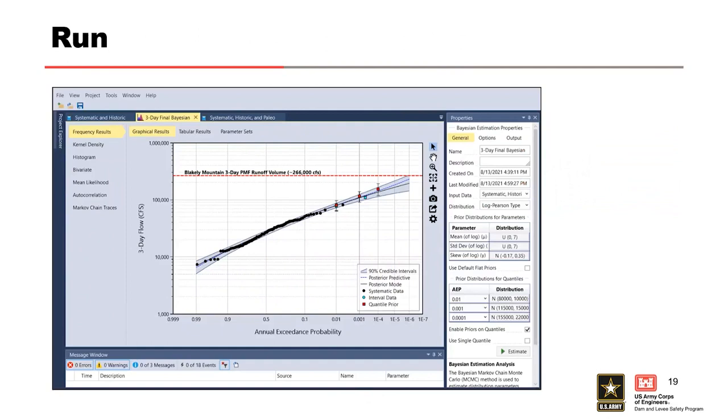Best Fit's Bayesian estimation tab allows the user to select an input data and a distribution type. It has default inputs for prior distributions that are already provided based on the input data that you select. There's default simulation options and output options that are already automatically set for you. Both options can be accessed through the option tabs, but those are set up so that you are more or less guaranteed to get a good result out of the box. The analysis can be run by selecting this estimation button at the bottom.